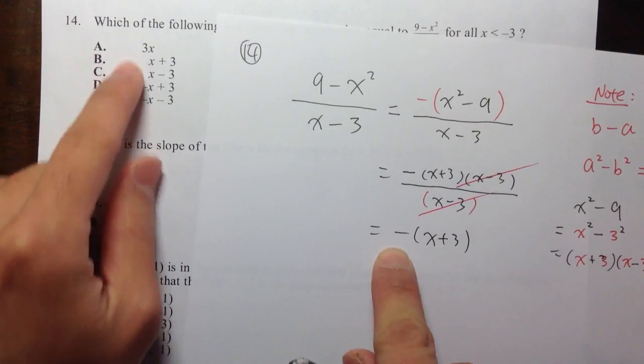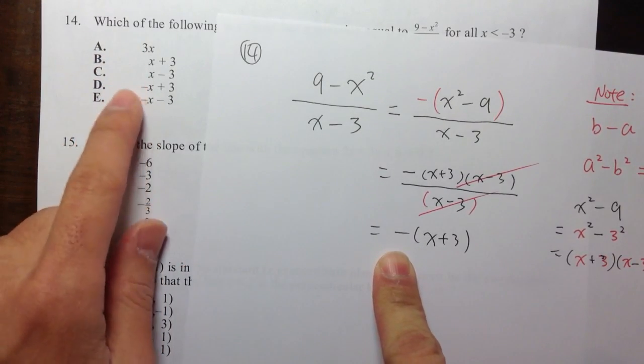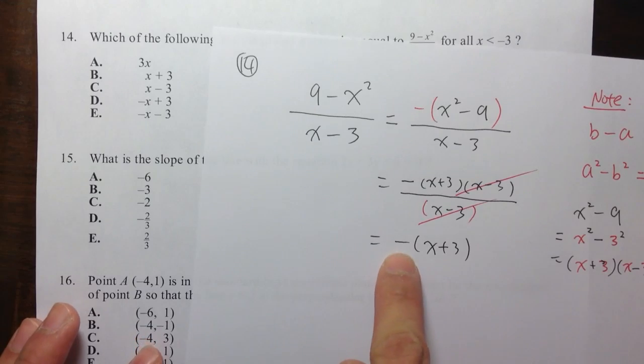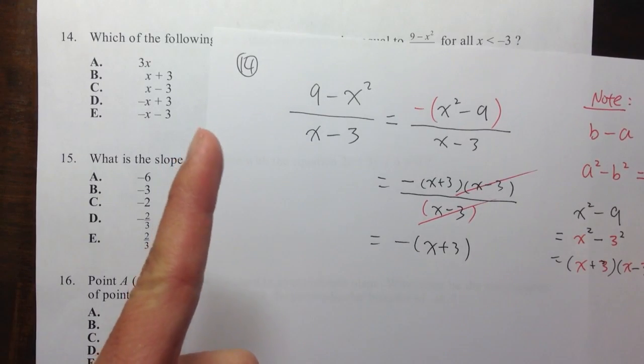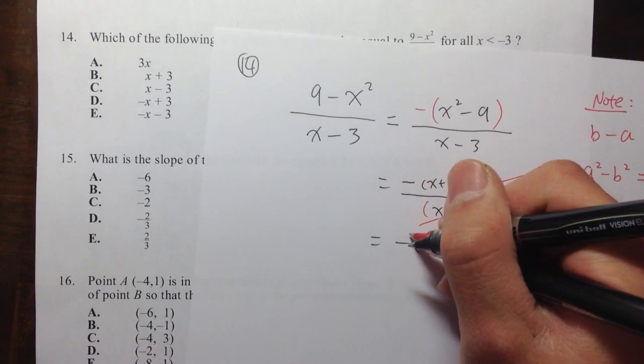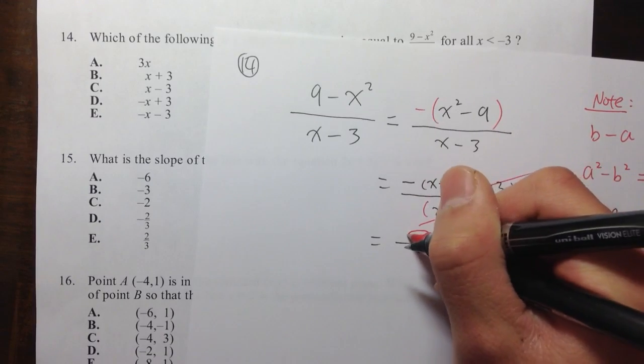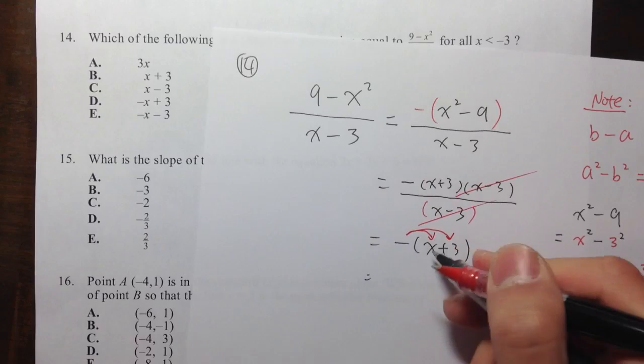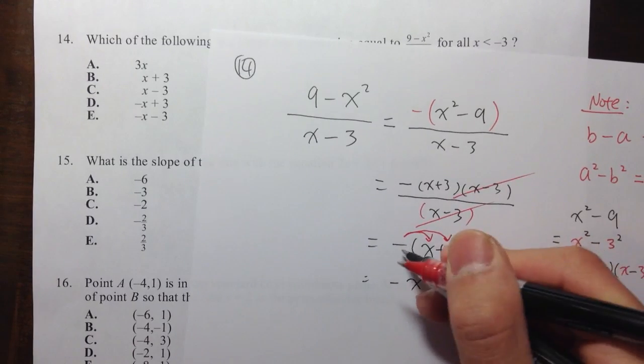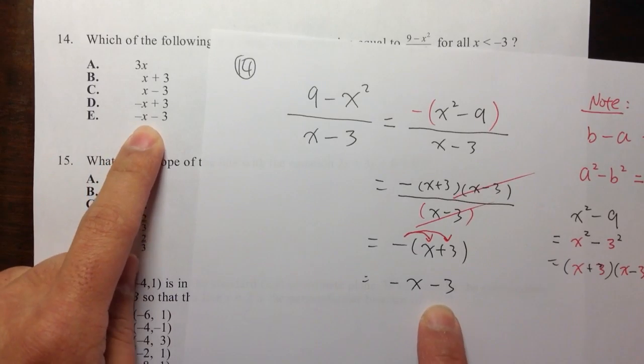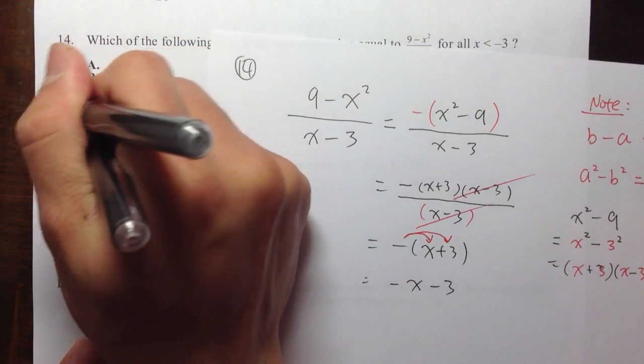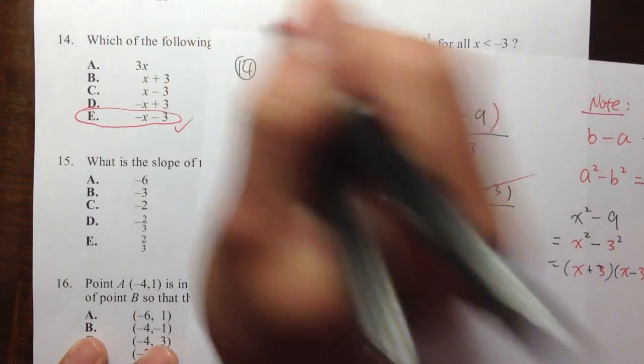It looks like there's nothing that has a parenthesis for the answer. Right here I have negative x plus 3. I need to do one more step. I need to take the negative and multiply it inside, distribute it inside. Negative times x is negative x, negative times positive 3 is negative 3. So negative x minus 3, that's the answer choice E.